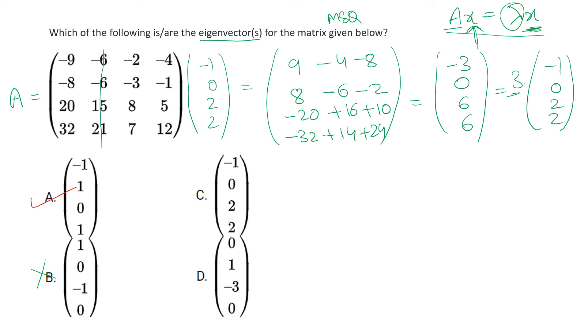From this we can take out three as common and it will be minus one, zero, two, and two. Basically this is three times x, so we got the value of lambda to be three and this is the same x we have got back. So again option C is one of the correct options, it is also an eigenvector for the given matrix.